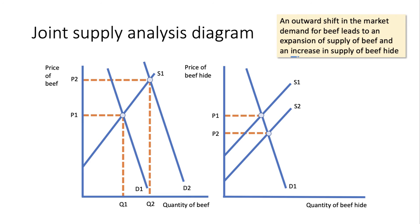With joint supply you can use an analysis diagram. Let's take the market for beef on the left-hand side — there's been an outward shift in the demand for beef, causing the price to go up from P1 to P2, and crucially the quantity supplied to expand from Q1 to Q2.